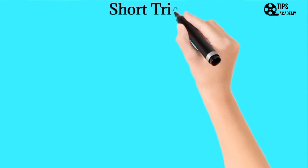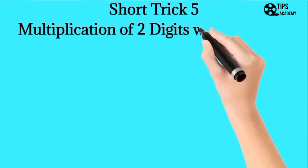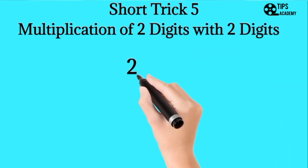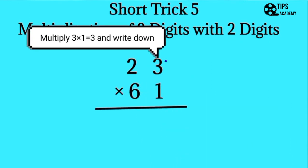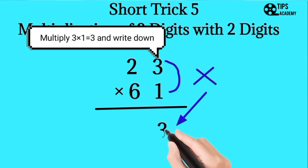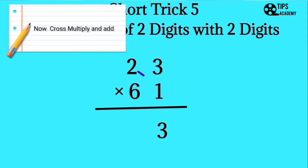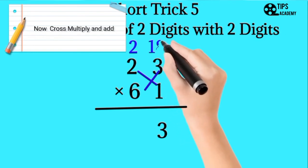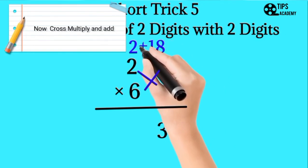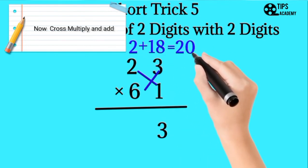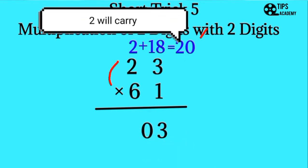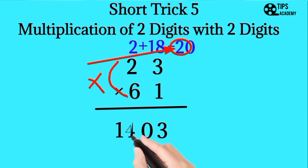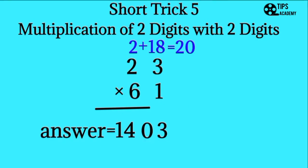Short trick number five: multiplication of two digits with some other two digits. For example, we want to multiply 23 with 61. First we multiply the left element of both numbers and write down. After that we cross-multiply 2 with 1 and get a result, then multiply 6 by 3 to get 18, and add these two numbers. The result will be 20; we write 0 and 2 will be the carry for the next number. Now we multiply the right element 6 and 2 and add carry 2. This will be the answer.